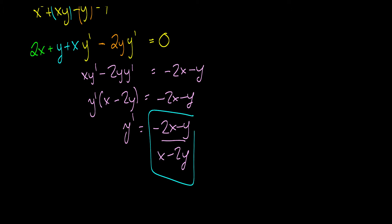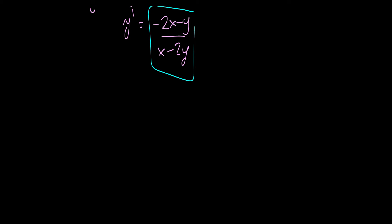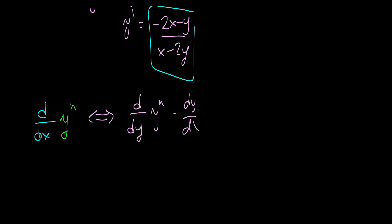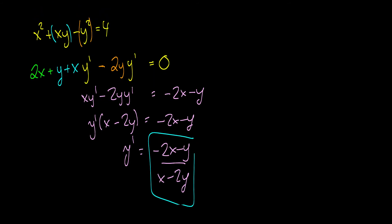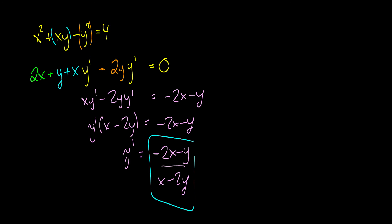This really isn't all that difficult. It's just understanding that when you have the derivative with respect to x of some variable y to the n, this equals the derivative with respect to y of y to the n, times the derivative of y with respect to x. It's just applying the chain rule in a different form called implicit differentiation. It works exactly the same. If a function is easy enough, you can isolate y and take the derivative, but in cases like x squared plus xy minus y squared equals 4, you can't isolate y nicely — you have to differentiate implicitly.